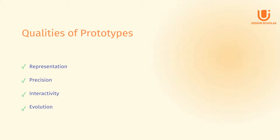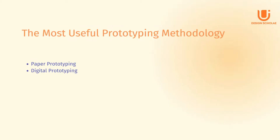The last quality is evolution, the life cycle of the prototype. Some are built quickly, tested, thrown away and then replaced with an improved version, known as rapid prototyping. Others may be created and improved upon, ultimately evolving into the final product. We are going to explore prototypes in two categories: paper prototyping and digital prototyping.